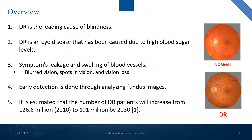Diabetic Retinopathy is a disease affecting the eyes, caused by a change in the blood vessels of the retina. It occurs when the blood vessels in the eyes begin to seal or leak. In some cases, new blood vessels may grow on the surface of the retina. Common symptoms include blurred vision, spots in vision, and vision loss. Early detection is done through analyzing fundus images with customized software. Statistically, the number of DR patients is estimated to increase from 126.6 million in 2010 to 191 million by 2030.